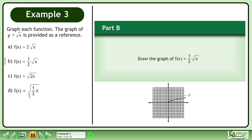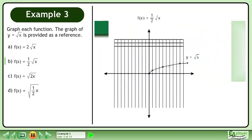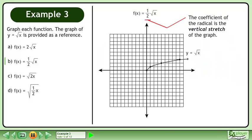In Part B, draw the graph of f equals 1 half times the square root of x. The coefficient of the radical is the vertical stretch of the graph. Halve the height of the graph to draw f equals 1 half times the square root of x.